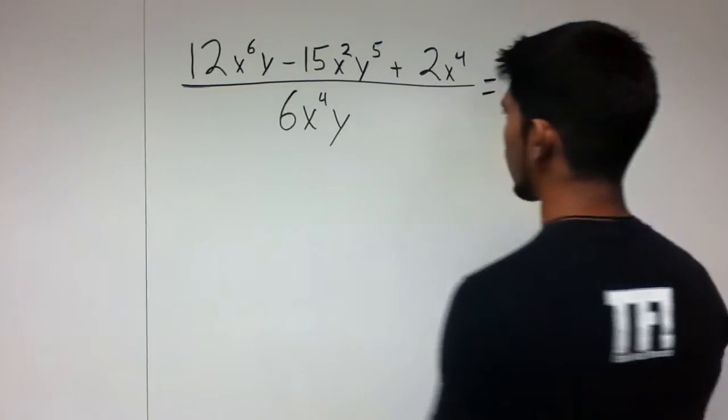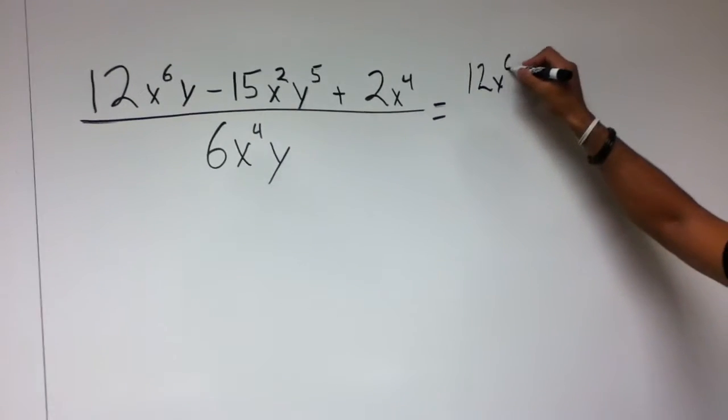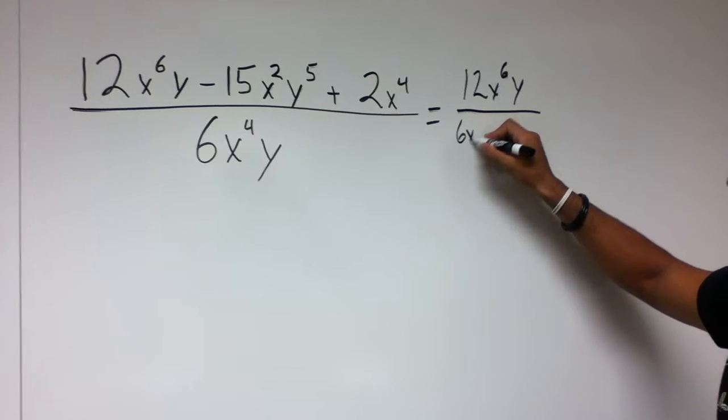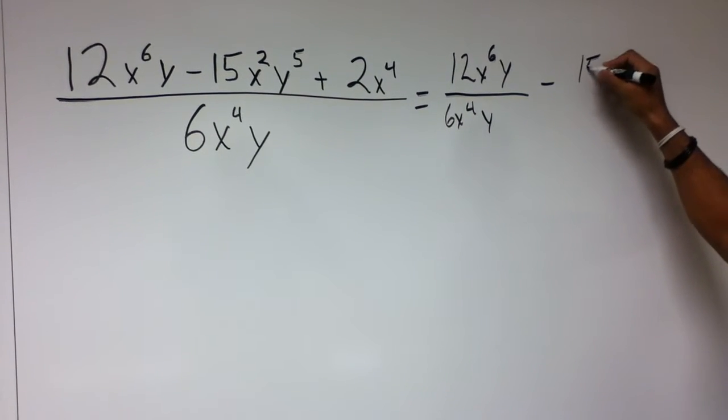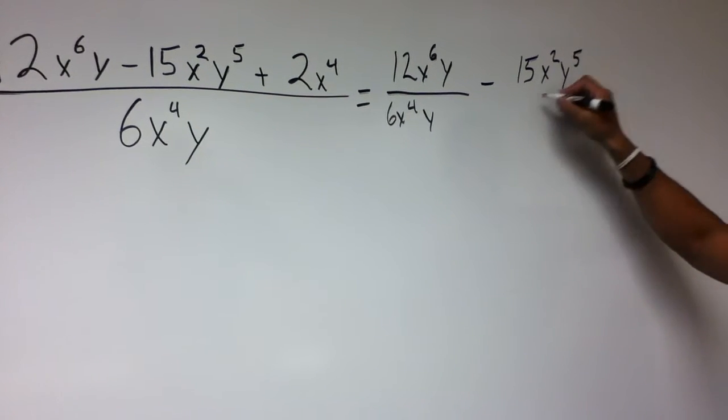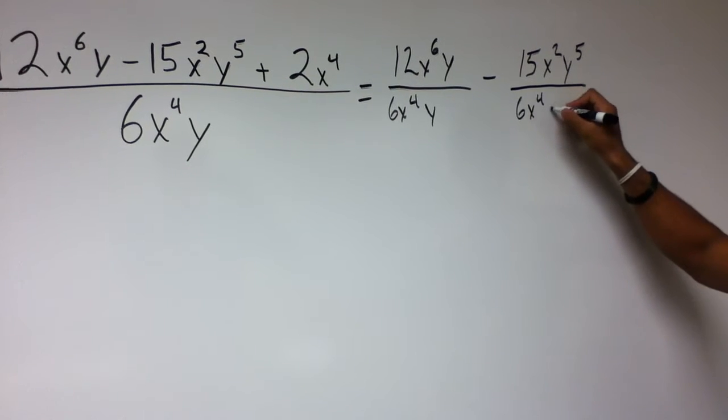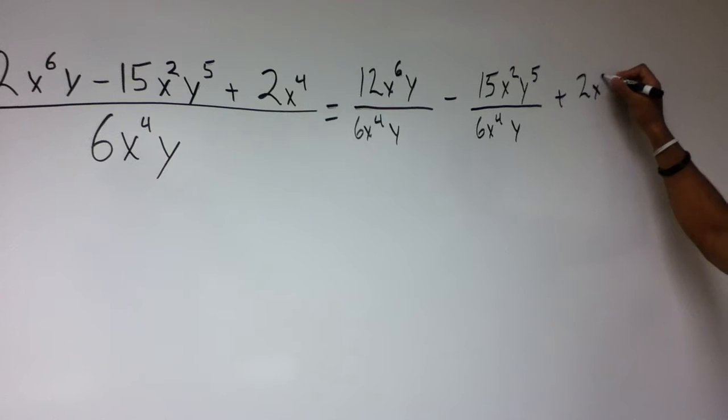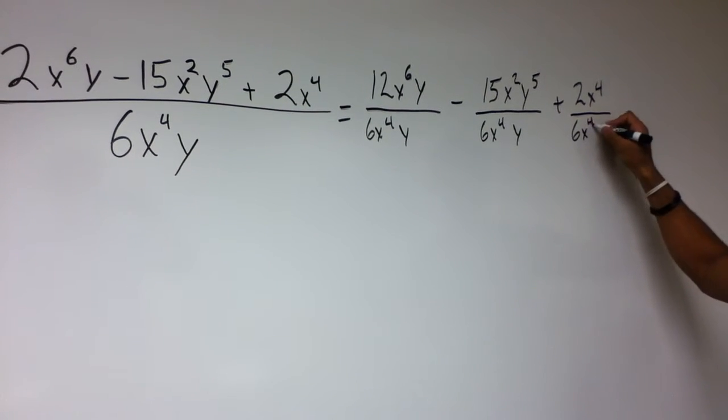We begin by putting 12x to the 6th y over 6x to the 4th y minus 15x squared y to the 5th over 6x to the 4th y plus 2x to the 4th over 6x to the 4th y.